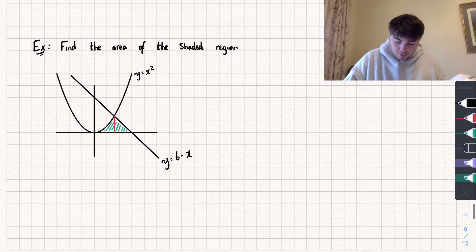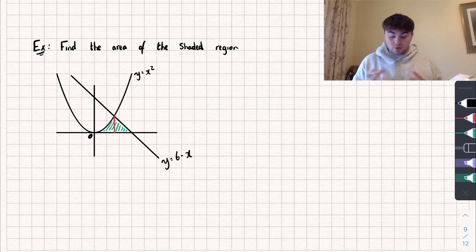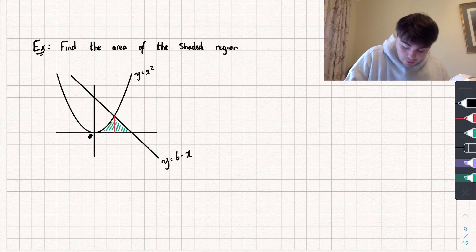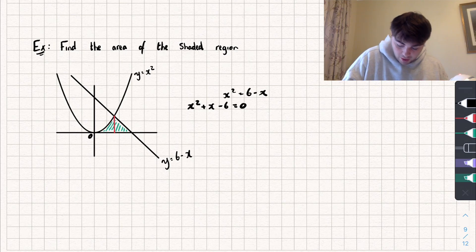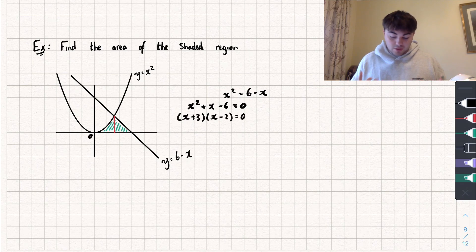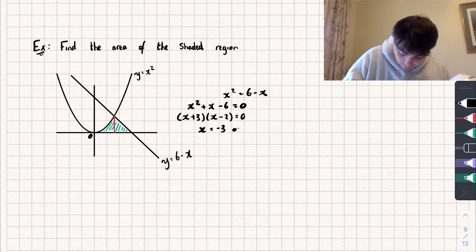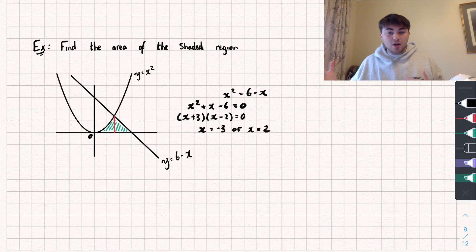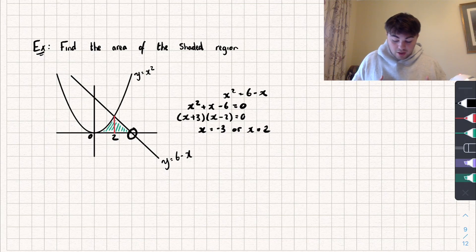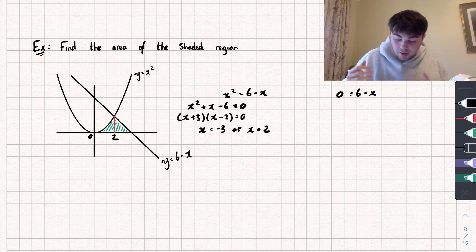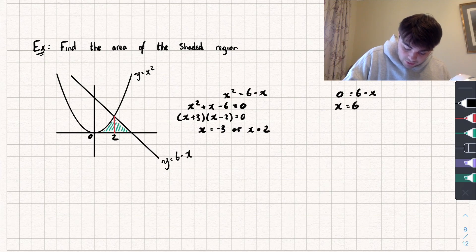First, x equals 0 on the left. To find where the curve and line intersect, we set x squared equal to 6 minus x, giving x squared plus x minus 6 equals 0. Factorising: x plus 3 times x minus 2, so x equals negative 3 or x equals 2. Since we're on the right-hand side of the y-axis, they intersect at x equals 2. The line y equals 6 minus x intercepts the x-axis when y equals 0, so 0 equals 6 minus x, giving x equals 6.